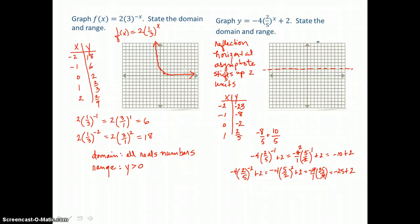Now I'm going to graph my ordered pairs. Negative 2, negative 23 is going to be off my graph. So the first point that I'm going to graph is negative 1, negative 8. And my y-intercept is 0, negative 2. And I have another point, 1, 2 fifths on this curve.